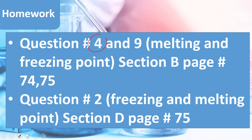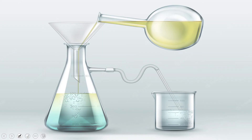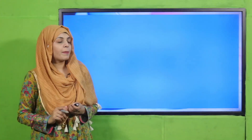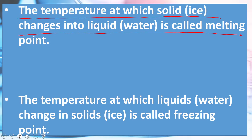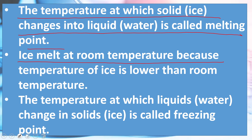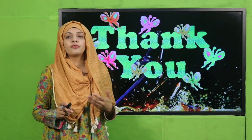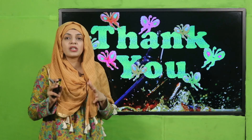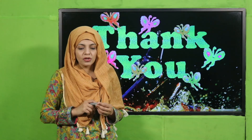For homework, you will do question number 4 and 9, melting and freezing points, Section B, page number 74 and 75. You will also do question number 2, freezing and melting points, Section D, page number 75. For the wrap-up: today we have learned that the temperature at which solid ice changes into liquid water is called the melting point. Ice melts at room temperature because the temperature is higher than zero degrees. The temperature at which liquid water changes into solid ice is called its freezing point. I hope you now know about freezing point and melting point and how matter changes its state when heated or cooled. Keep everybody around you safe. Have a good day. Thank you so much. Allah Hafiz.